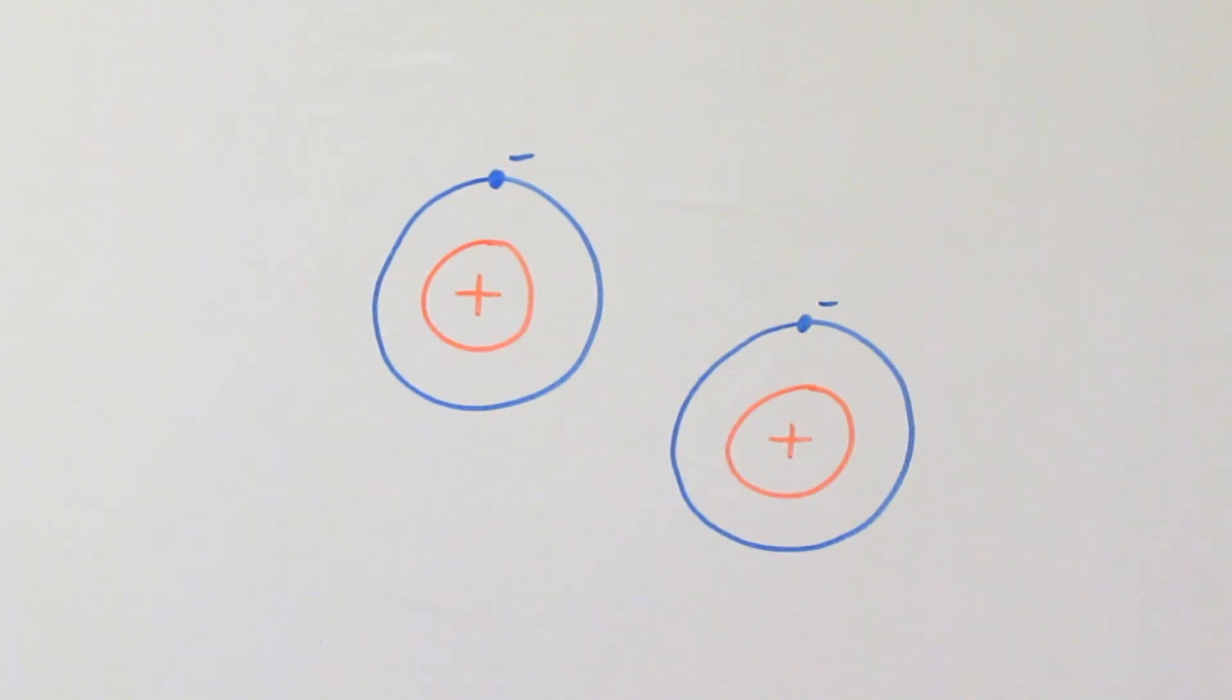The word fusion means joining, and the process is actually fairly straightforward. It's just a couple of small atoms, such as hydrogen atoms, which join together to make a slightly bigger atom. That's all that fusion is.